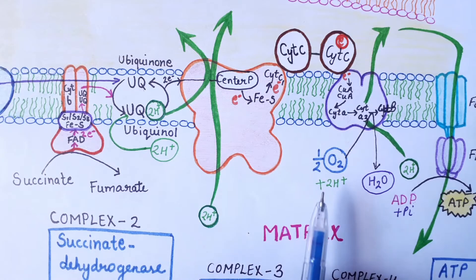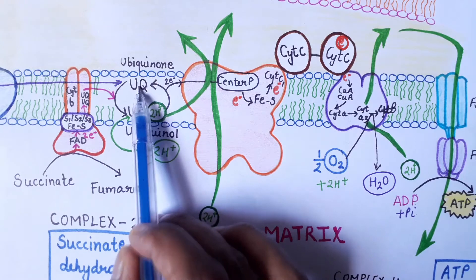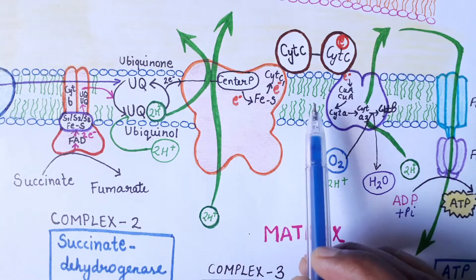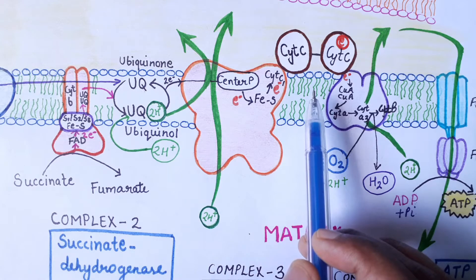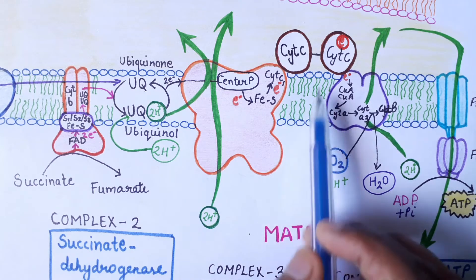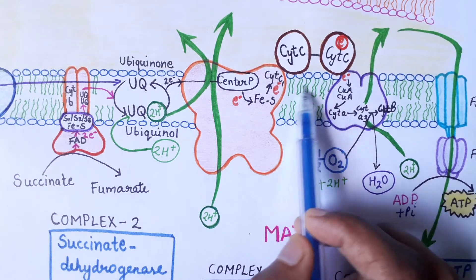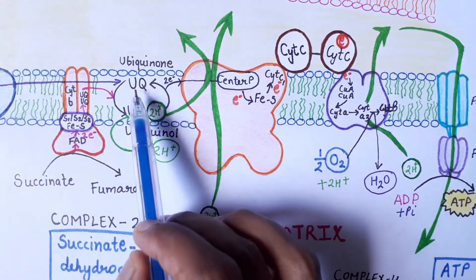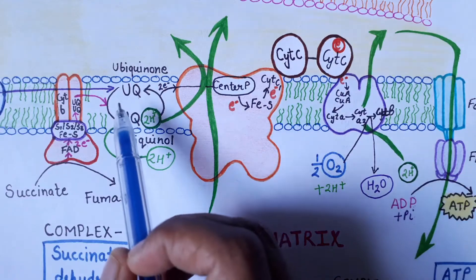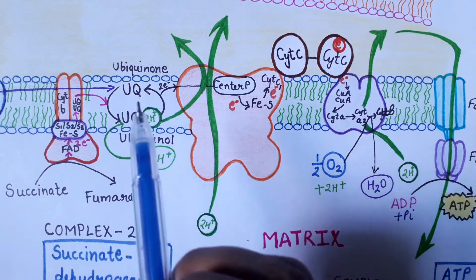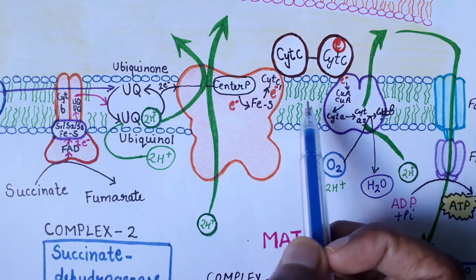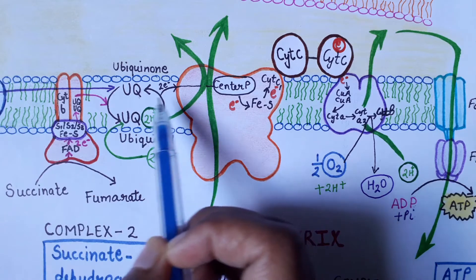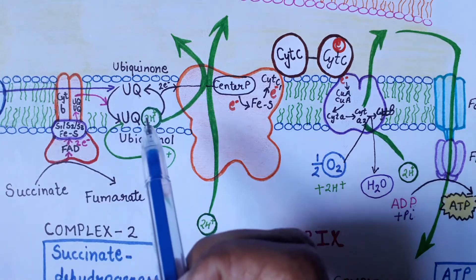Within the Q cycle there are two major components. The first is ubiquinone or ubiquinol, which is present within the hydrophobic core of the membrane. The electron transport chain takes place within the inner membrane of the mitochondria, which consists of a hydrophilic head and a hydrophobic core. Because ubiquinone is hydrophobic and uncharged, it can easily migrate along the hydrophobic core of the membrane.